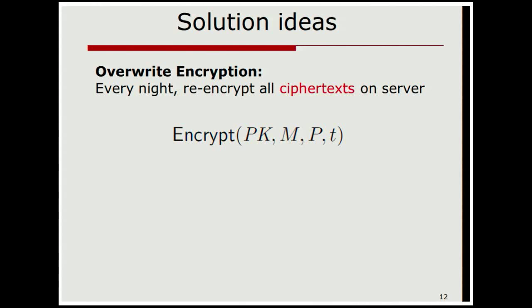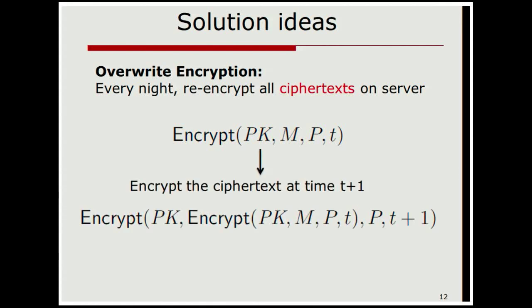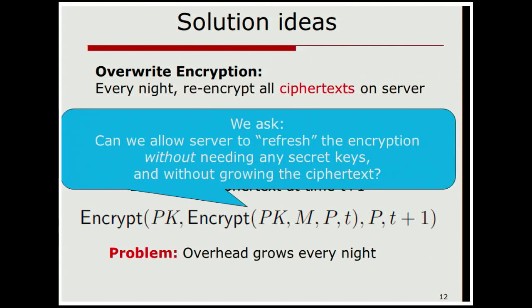Another natural solution that doesn't require secret information would be to just re-encrypt all the ciphertexts. The server could take the old ciphertext and attach a wrapper around it — encrypt the time t ciphertext to produce a time t+1 ciphertext. This would work, but the overhead would be disastrous: the size would grow with t, and the decryption time would also grow with t as the onion layers are decrypted one at a time. So the main question we ask is: can we allow the server to refresh the time without needing secret keys or growing the ciphertexts?